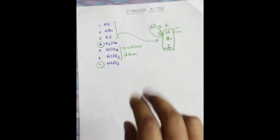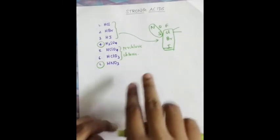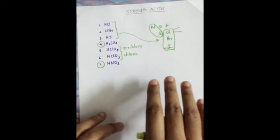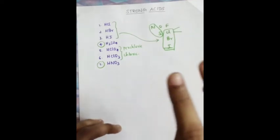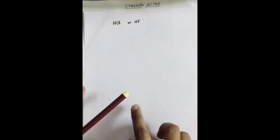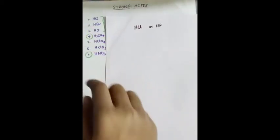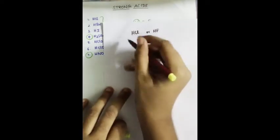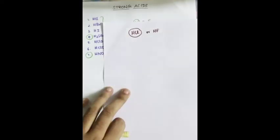If you have any acid not in this list, you can be 100% sure it is weak. So for the first question — HCl or HF, which is the strong acid? HF is not in the 7 strong acids list, so the answer is HCl.